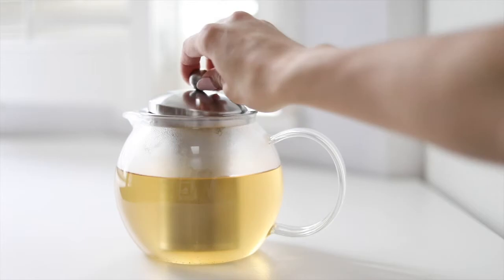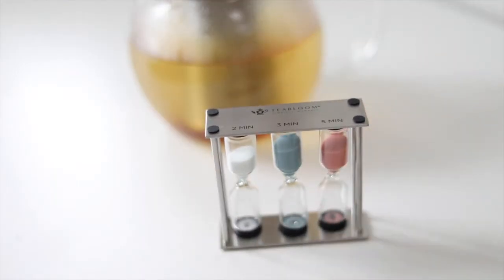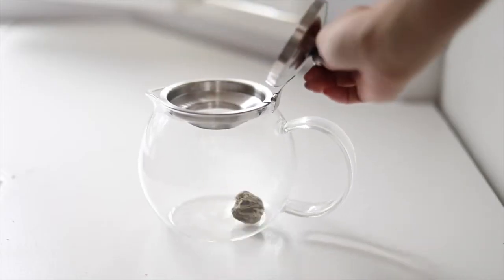Steep tea three ways. One, by putting your favorite loose leaf tea in the infuser, pour in hot water and steep for one to five minutes.